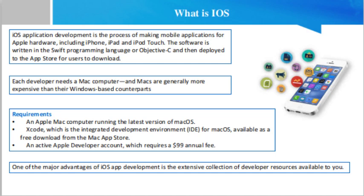Even the best developers don't write perfect code, at least not the first time around. Once you have completed your iOS app development, you will need to test it. Fortunately, you will not need to test mobile devices from multiple manufacturers as you might when developing for Android. iOS is Apple's proprietary mobile operating system, which runs only on Apple iPhones. You might want to test your iOS app on several generations of iPhone, but there are still fewer devices to test than with Android.